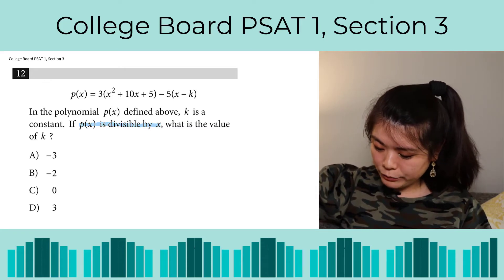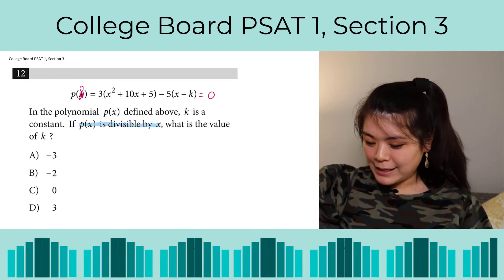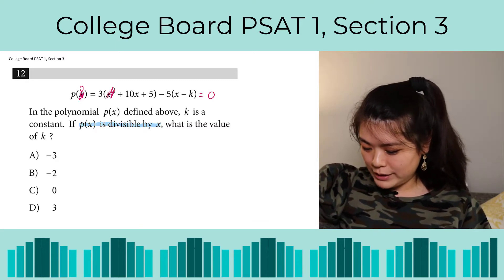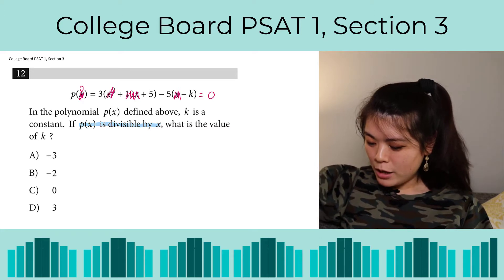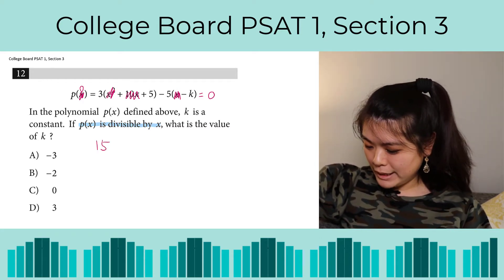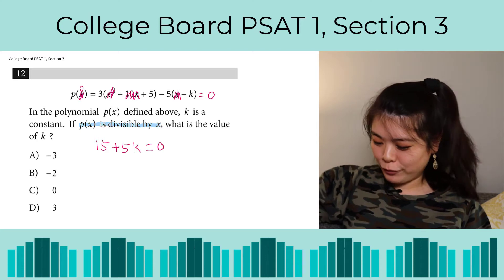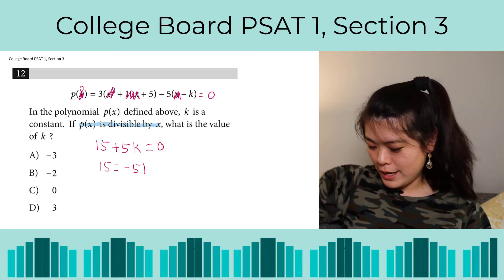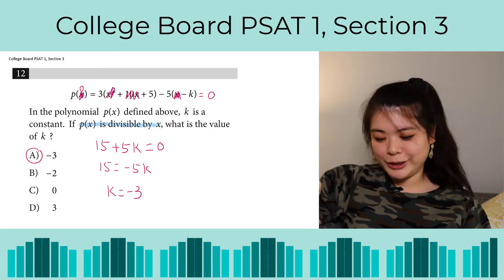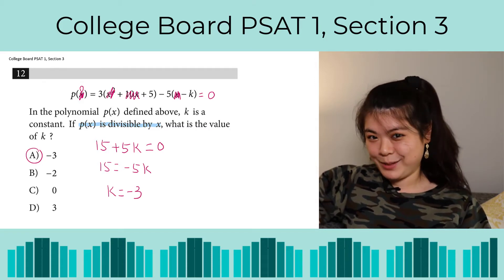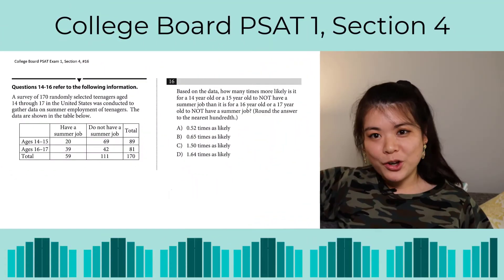If we set an input of zero in place of x, we'll get an output of zero. So if we set zero for all the x variables, all of the x terms go away. Now let's simplify: three times five is 15, minus a negative 5k, so that's plus 5k, and that equals zero. Now we just solve for k: 15 equals negative 5k, which means k equals negative 3. This question really comes down to your understanding of what it means for a polynomial to be divisible by something — in this case x is a factor of that polynomial.